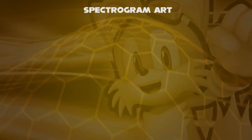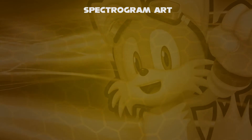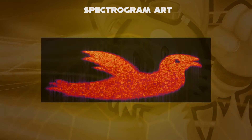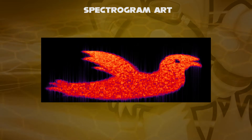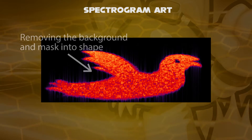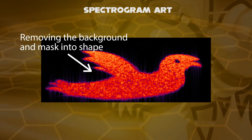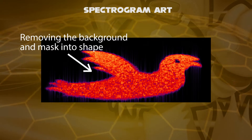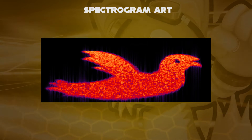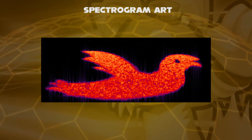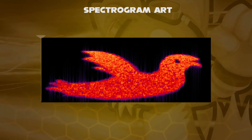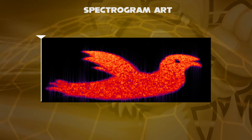Now we go ahead with art. For example, let's draw a bird. All you have to do is remove the outer background and mask them together to form a bird. As a result, the frequency will vary one after the other.